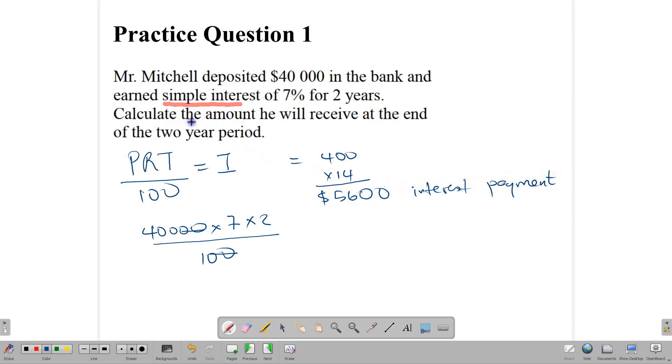So this is the interest payment. The question says, calculate the amount he will receive at the end of the two-year period. Notice that the question did not say, calculate the interest that he will receive at the end of the two-year period. Those little things matter. So because it says, calculate the amount, we are going to take our $40,000 now and add the interest payment. So $5,600. And so the amount that he will receive at the end of the two-year period would naturally be his principal plus the interest that is accrued to him. So that would be $45,600. That's what he would get at the end of the two-year period. So this is how we use the formula.